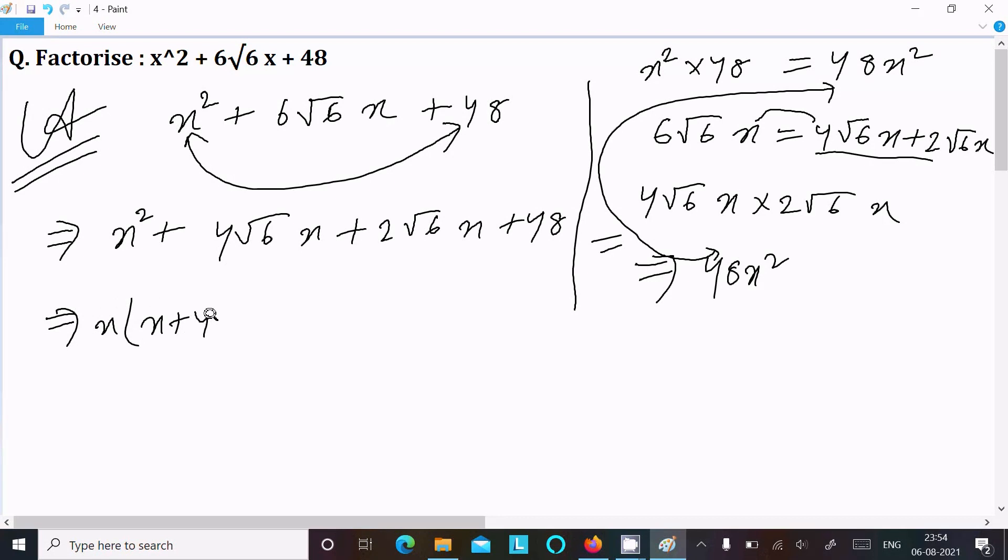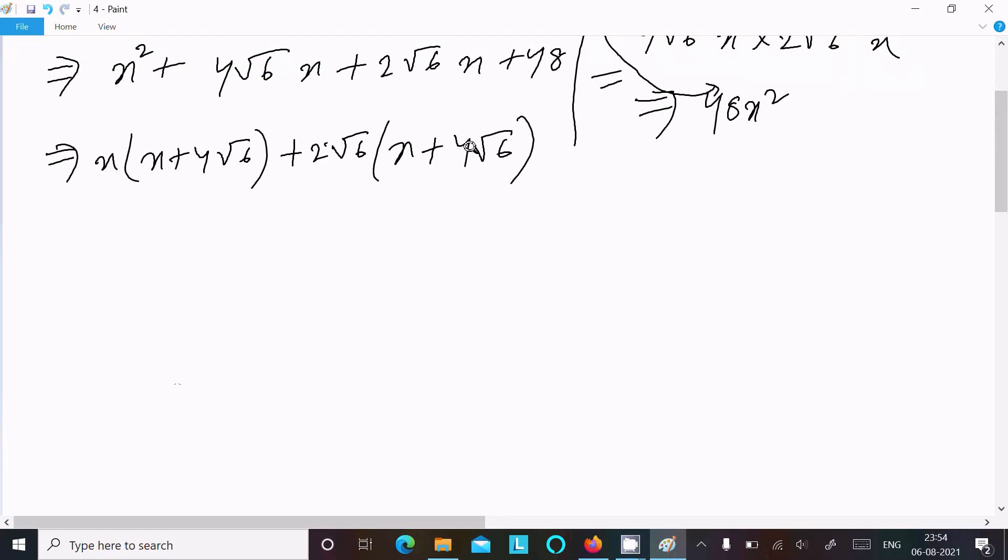Taking the x combination: x(x + 4√6). Now, taking the 2√6 combination, this gives x and 48. Taking 2√6 common, it becomes 4√6. Here, 2 × 24 is 48. Now x + 4√6 is common between these two terms, so take that common: (x + 4√6).